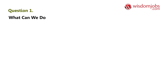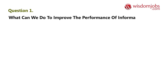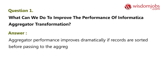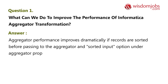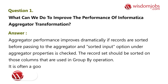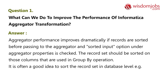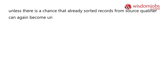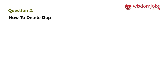Question 1: What can we do to improve the performance of Informatica Aggregator transformation? Answer: Aggregator performance improves dramatically if records are sorted before passing to the aggregator and the sorted input option under aggregator properties is checked. The record set should be sorted on those columns used in group by operation. It is often a good idea to sort the record set at the database level, e.g., inside a source qualifier transformation, unless there is a chance that already sorted records can become unsorted before reaching the aggregator.